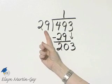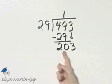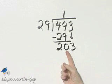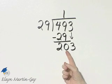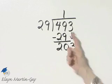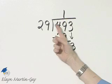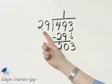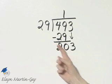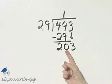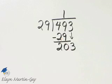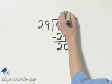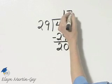Let's estimate this as 30. How many 30s are there in 203? 7 times 3 is 21, a little bit more. But since I'm rounding up, let's try 7.